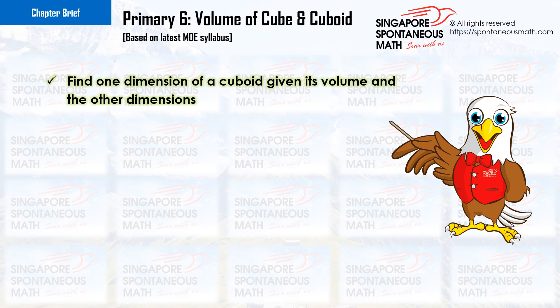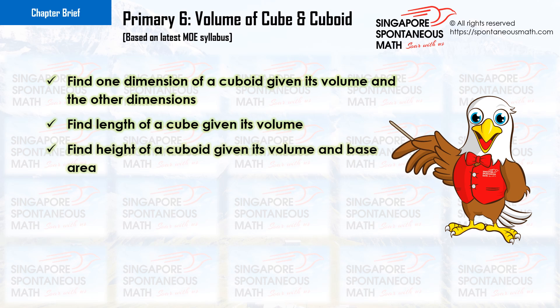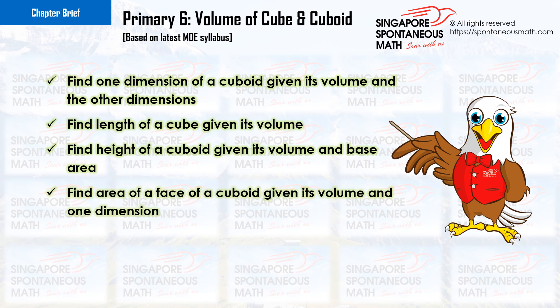Find one dimension of a cuboid given its volume and the other dimensions. Find length of a cube given its volume. Find height of a cuboid given its volume and base area. Find area of a face of a cuboid given its volume and one dimension. Use of square root and cube root signs.